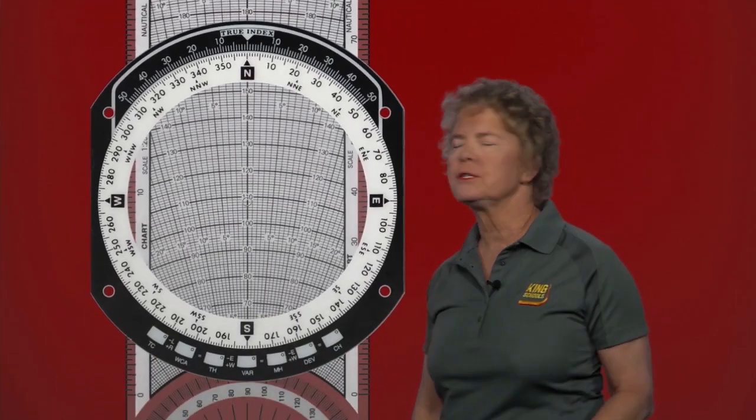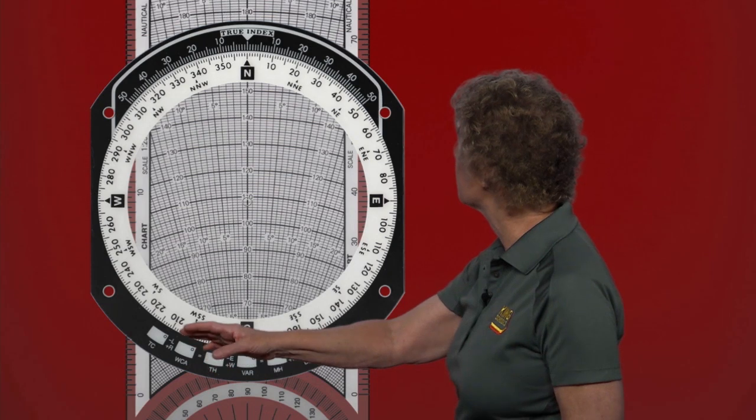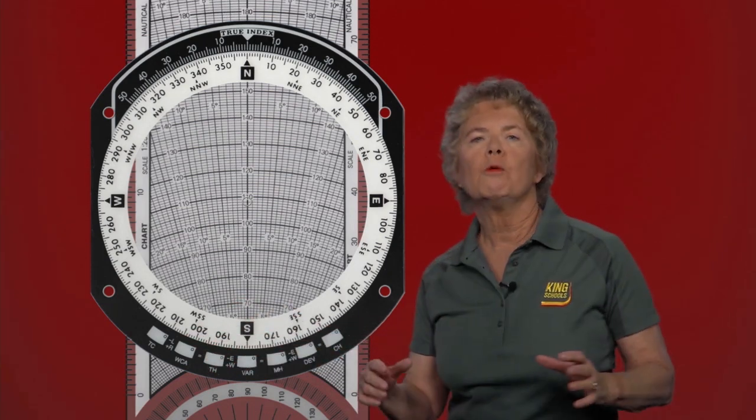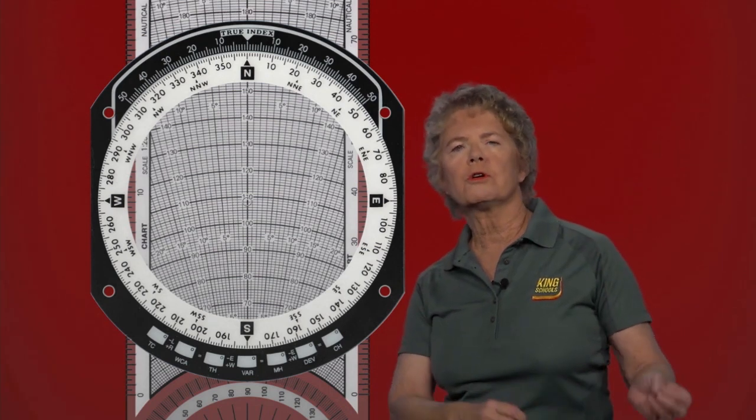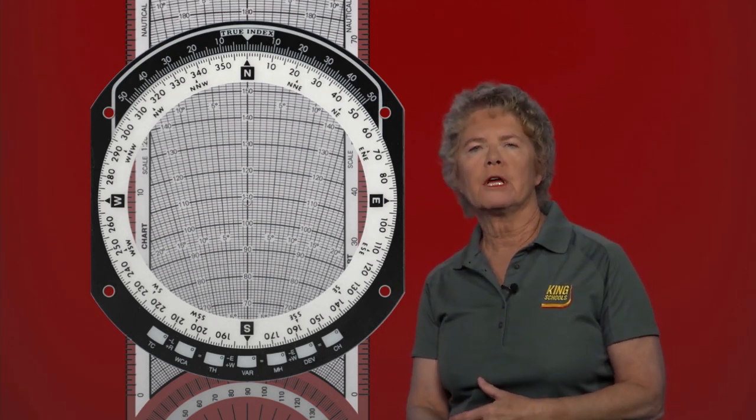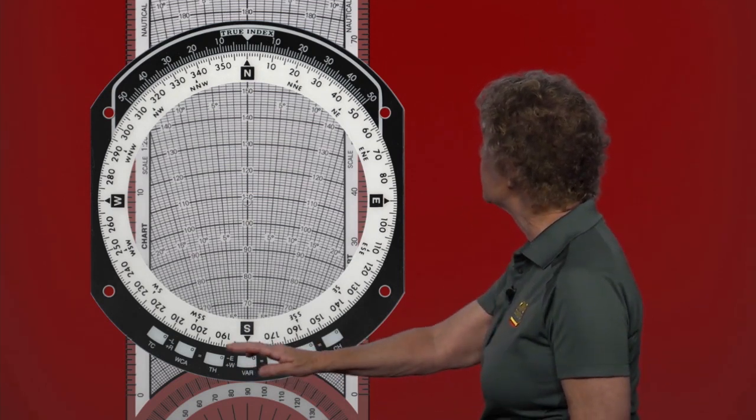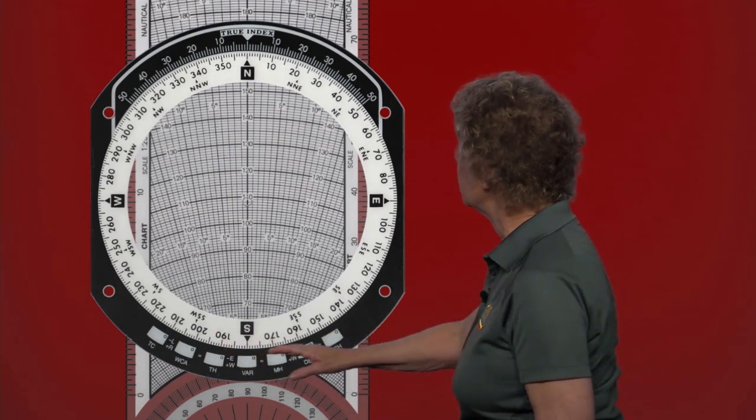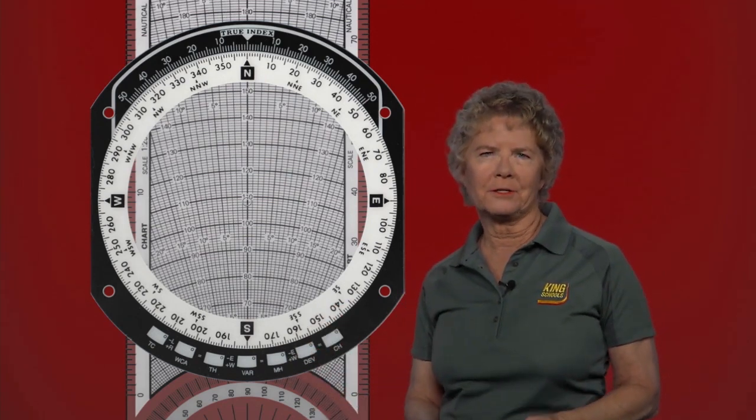Across the bottom of the flight computer on the wind side, we've got boxes that we'll look at closely later on. We'll be filling those in to help us step our way through the problem: from true course, wind correction angle to true heading, magnetic variation to magnetic heading, compass deviation to compass heading. The boxes will guide us along. All we have to do is fill them in to get the correct answer.